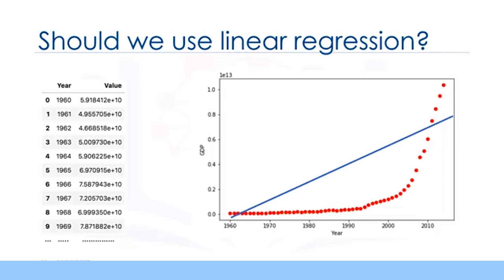The scatter plot shows that there seems to be a strong relationship between GDP and time, but the relationship is not linear. As you can see, the growth starts off slowly, then from 2005 onward, the growth is very significant. And finally, it decelerates slightly in the 2010s.